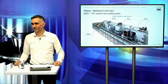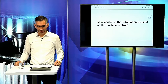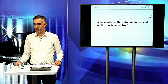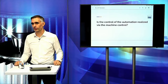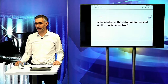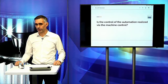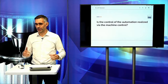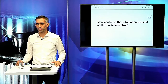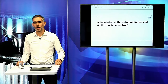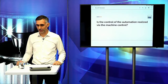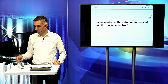We already have the first question: Is the control of the automation realized via the machine control? This cannot be answered with one sentence. If we have two machines interlinked with a track motion system, yes, they can be controlled by the machine. If there are three machines, the track motion system has its own control, but they communicate with each other. For bigger, more complex automation solutions, they have their own control as well — for more flexibility — but there are interfaces to make them communicate.